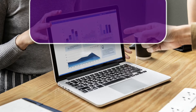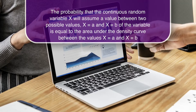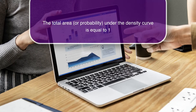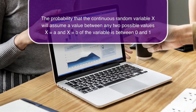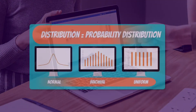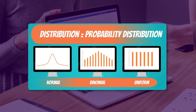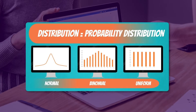Characteristics of continuous probability: the probability that a continuous random variable x will assume a value between two possible values x = a and x = b is equal to the area under the density curve between x = a and x = b. The total area or probability under the density curve is equal to 1. The probability will assume a value between any two possible values and is between 0 and 1. The pictorial presentation shows that the normal distribution curve has a bell shape, binomial has ups and downs, and uniform has a flat horizontal structure.